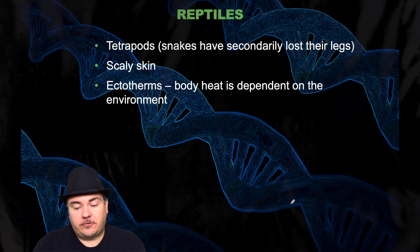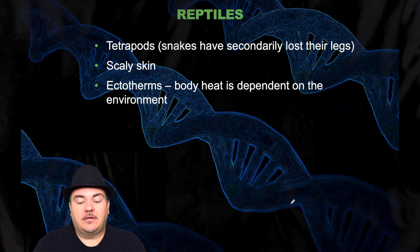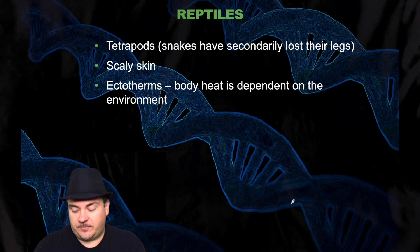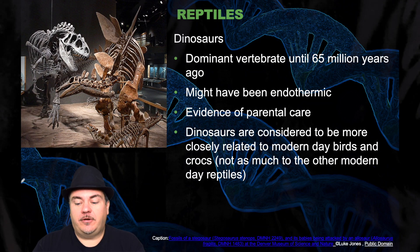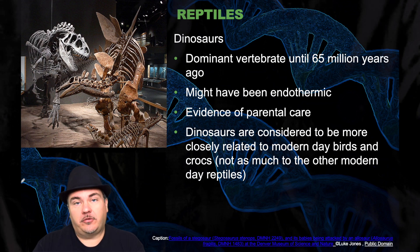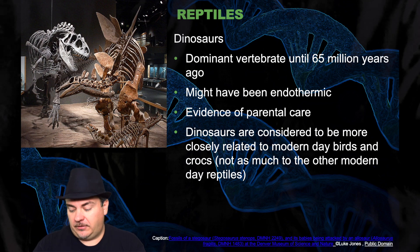The reptiles are tetrapods with four limbs, although snakes have secondarily lost their limbs. They have scaly skin and they're ectotherms, which means their body heat is dependent upon the environment — that's why you see things like snakes and alligators laying out in the sun to warm up their bodies. Then you have the dinosaurs, which were the dominant vertebrates until 65 million years ago. They might have been endothermic, generating their own body heat. There is evidence of parental care, and dinosaurs are considered to be more closely related to modern-day birds and crocodilians than to other modern-day reptiles.